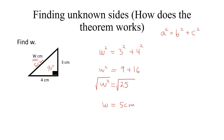As stated earlier, the hypotenuse in any right angle triangle is the longest side, and here we can see that proven because we got this side to be the longest. This triangle also forms a special triangle — the 3-4-5 ratio — which is a ratio we should know, as it can sometimes help us find an unknown side without applying Pythagoras' theorem.